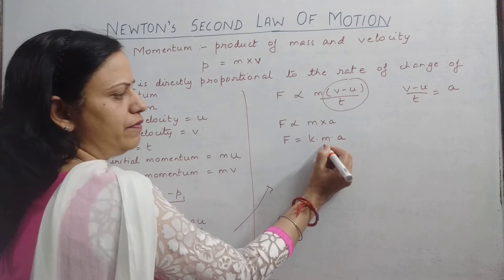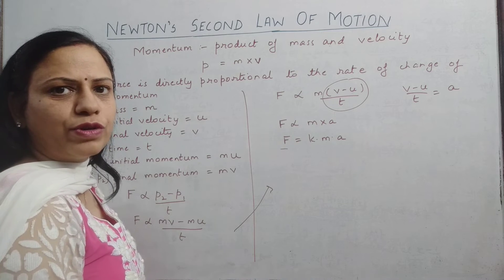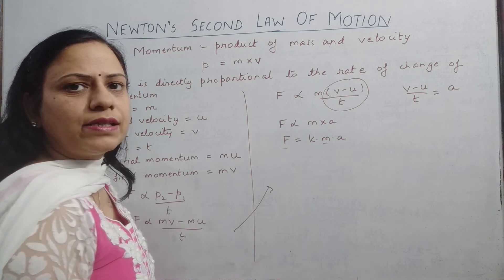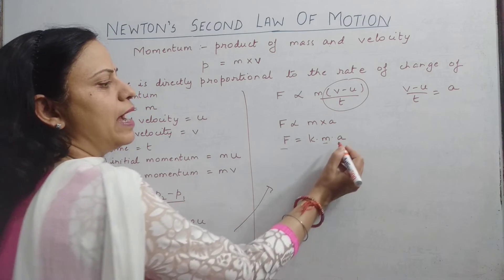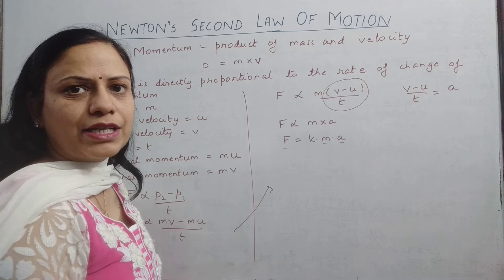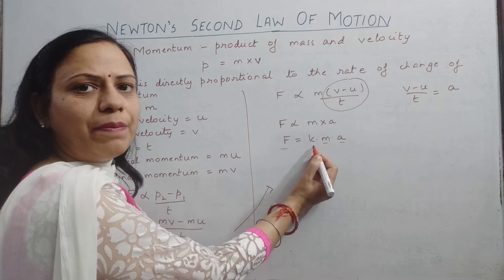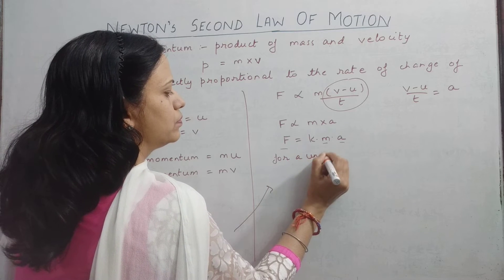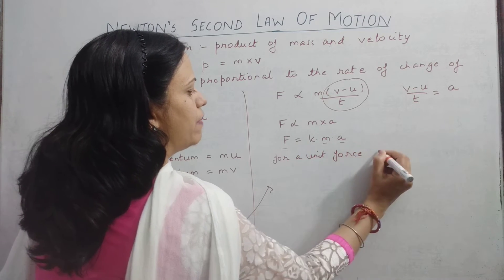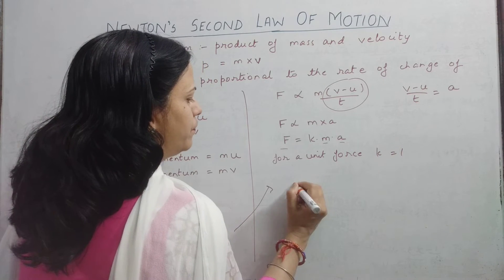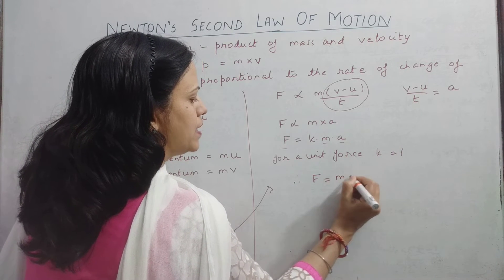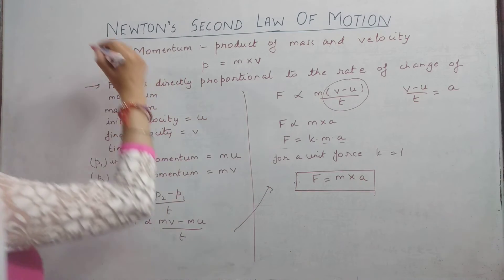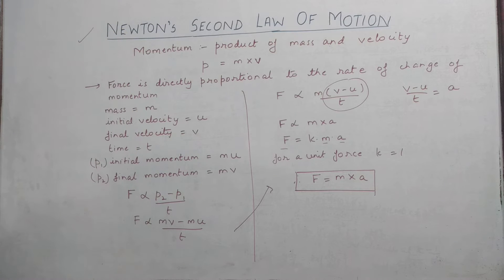If we are talking about a unit force — that is, 1 newton — with the mass of the object being 1 kg and the acceleration being 1 metre per second squared, then the value of K will be 1. Therefore, force equals mass into acceleration. This is the mathematical formulation of Newton's second law of motion.